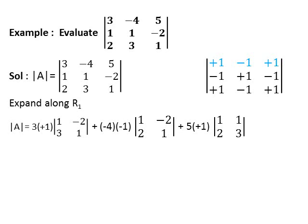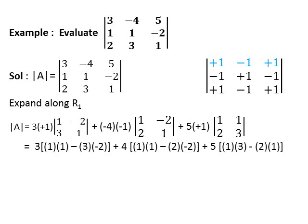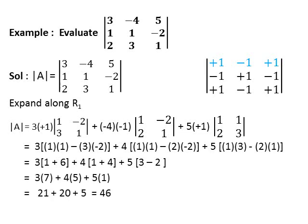In the next step, calculate the second-order determinants using the rule: product of diagonal elements minus product of non-diagonal elements. Simplifying, determinant of A equals 3×(1+4) + 4×(3−2) + 5×(3−2), which becomes 3×7 plus 4×1 plus 5×1, giving 21 plus 20 plus 5, equal to 46. So, determinant of A equals 46. Expanding along any other row or column gives the same value.